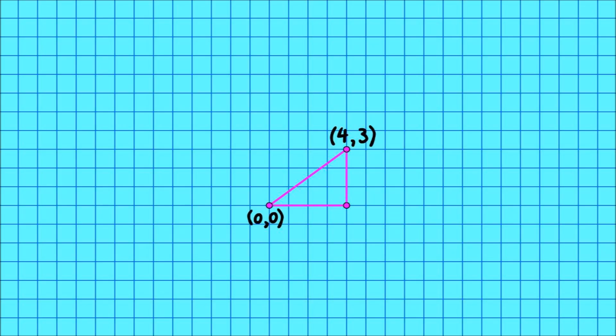For example, if we start at the origin, move four boxes to the right, and then three boxes upwards, then how far are we from the starting point? Well, in this case, A is equal to 4, B is equal to 3, and C is the number we're trying to find.